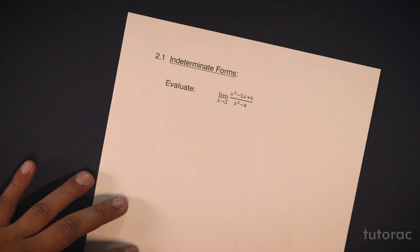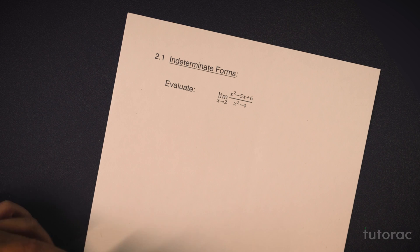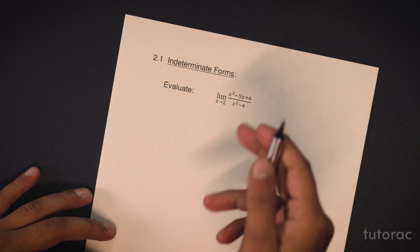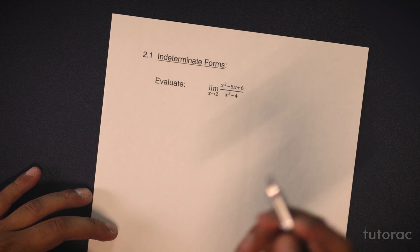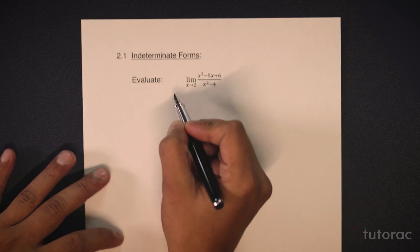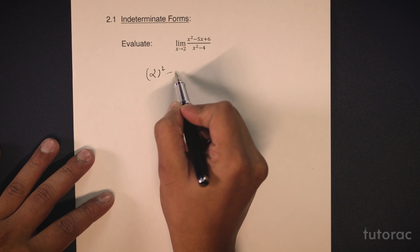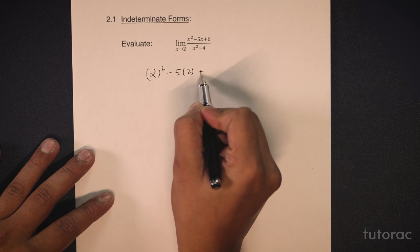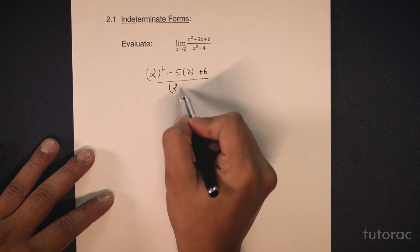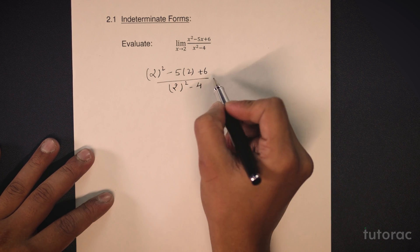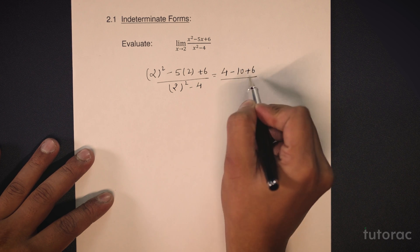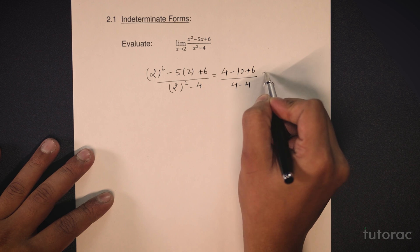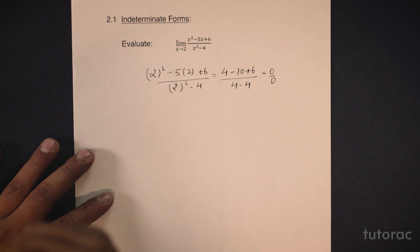Here we have our first question which asks us to evaluate this limit. If I try to put the value of x as 2, then I will get 2 square minus 5 into 2 plus 6 upon 2 square minus 4 which would give me 4 minus 10 plus 6 upon 4 minus 4 which would be equal to 0 by 0. As you can see here that this is an indeterminate form.